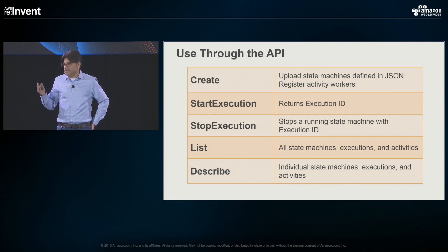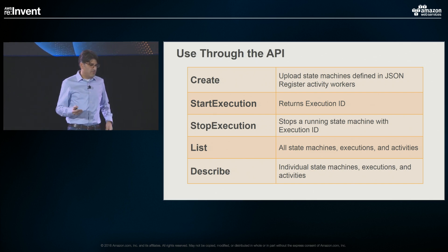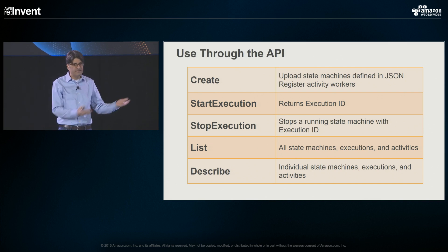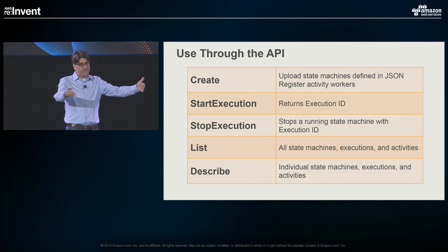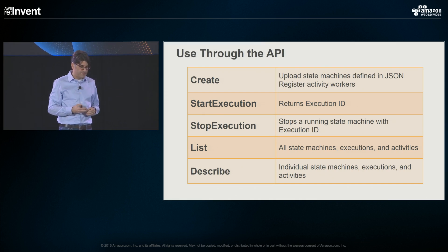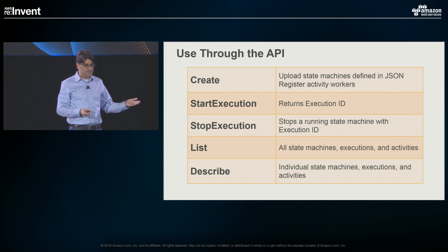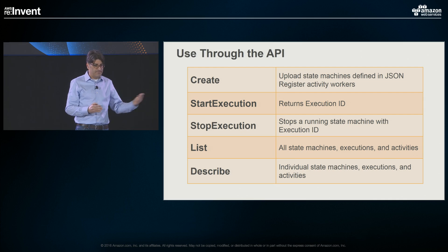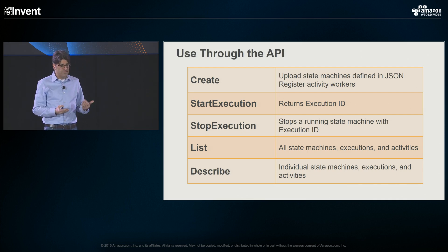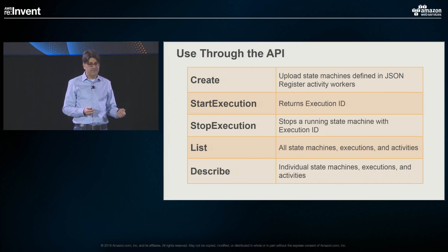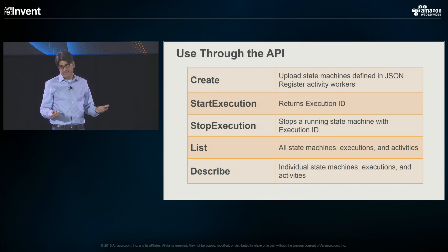You can also use this through the API, which is really simple — basically five basic calls. One is create things: create a state machine by uploading your JSON and giving it a name, registering a state machine type. You can also register your activity workers the same way. Start executions — tell it which state machine to run and it returns an execution ID, which you can specify or it will assign a random idempotent one. You can also stop an execution at any time. You have lists — list all state machines, all executions, and all activities in the system. And you can describe individual state machines, individual executions, and individual activities. That's basically it for the API.